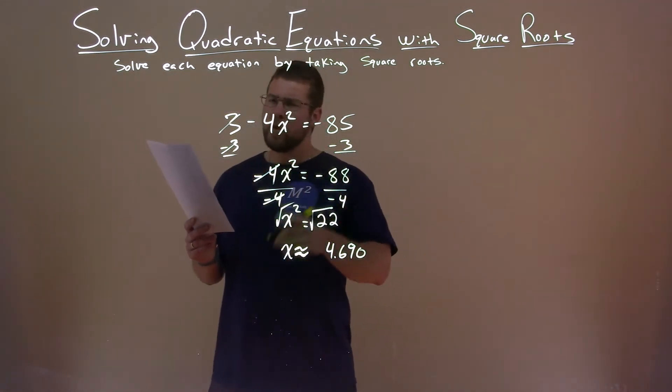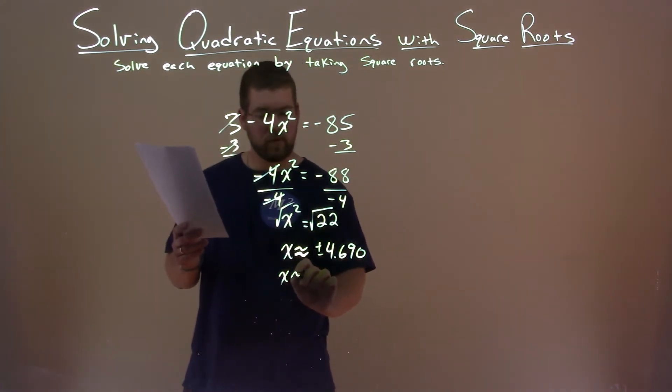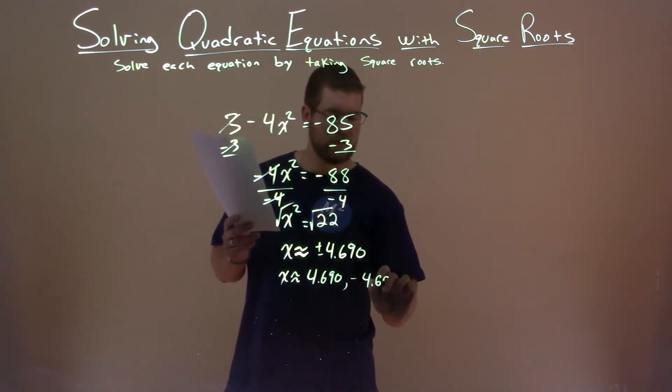But when we take a square root over an equal sign, we need to do a positive and negative. So x is approximately positive 4.690 and negative 4.690.